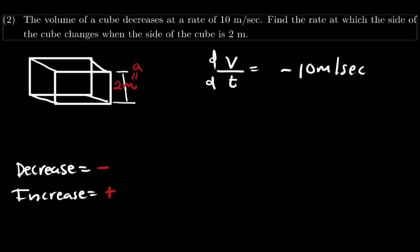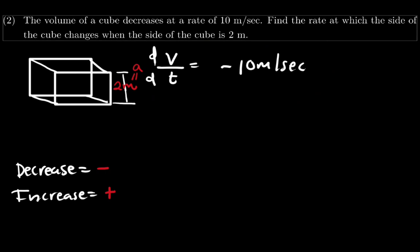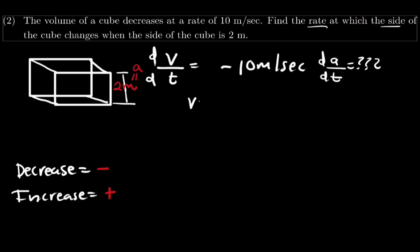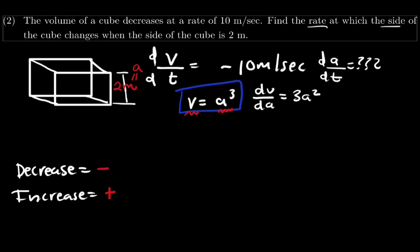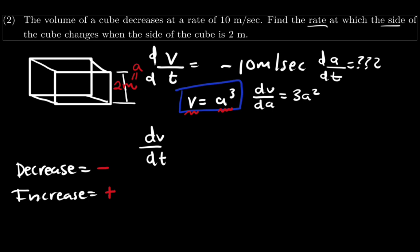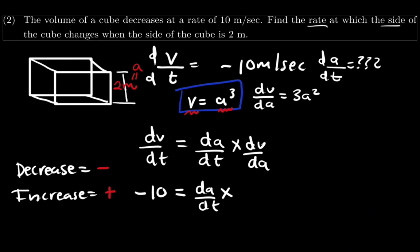Whenever they say 'decrease,' take the rate as negative; whenever they say 'increase,' take the rate as positive. So here we take dV over dt as negative 10. The question asks for the rate at which the side changes, dA over dt. We know the volume equals A cubed, so dV over dA equals 3A squared by the power rule. Using dV over dt equals dA over dt multiplied by dV over dA: negative 10 equals dA over dt multiplied by 3A squared.